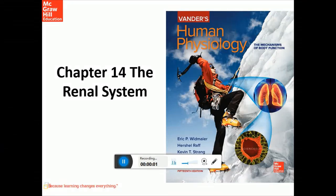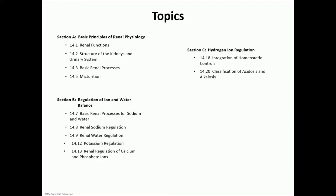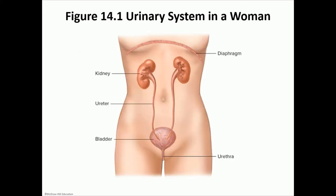This is a review of chapter 14, the renal system. We're going to be talking about the basic principles of renal physiology, then the details of the regulation of ion and water balance, and also hydrogen ion regulation, acidosis, and alkalosis.